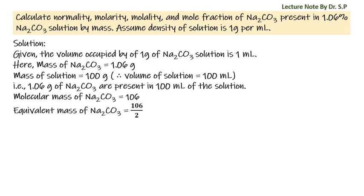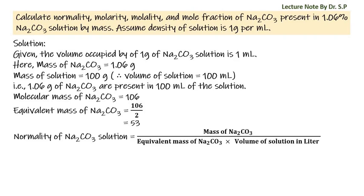Equivalent mass of sodium carbonate is equal to 106 divided by 2, that is equal to 53. Normality of sodium carbonate solution is equal to mass of sodium carbonate divided by equivalent mass of sodium carbonate, into volume of solution in liters. That is equal to 1.06 divided by 53 into 0.1, that is equal to 0.2 N.